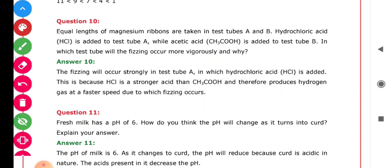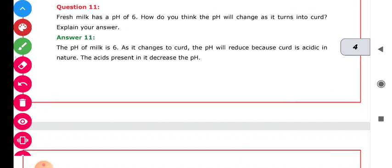Question number 11: Fresh milk has a pH of 6. How do you think the pH will change as it turns into curd? Explain your answer. The question asks in which way the pH will change.